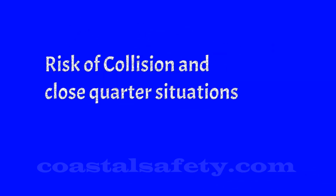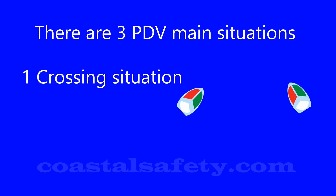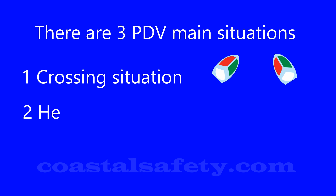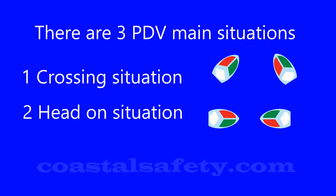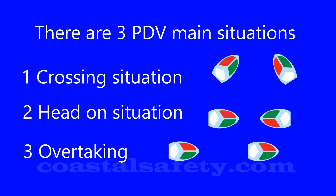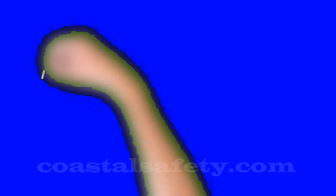Let's look at the risk of collision and the close-quarter situations that might be developing. There are three main ones: the crossing situation, the head-on situation, and the overtaking situation. In the overtaking situation, one vessel is going faster than the other and approaching from behind.